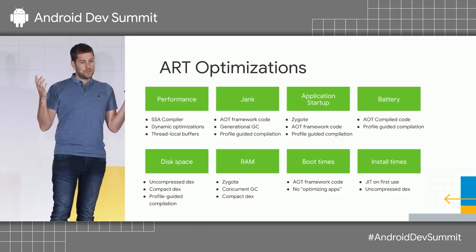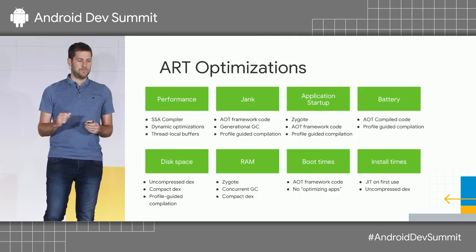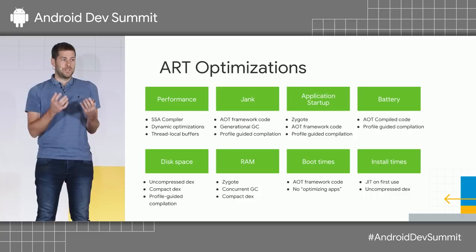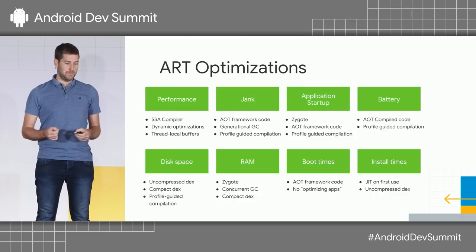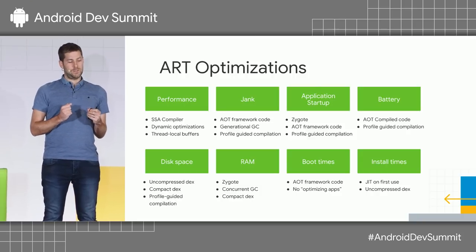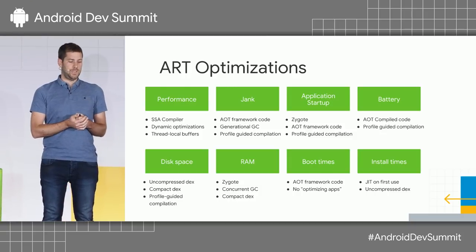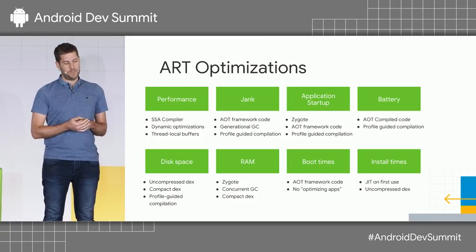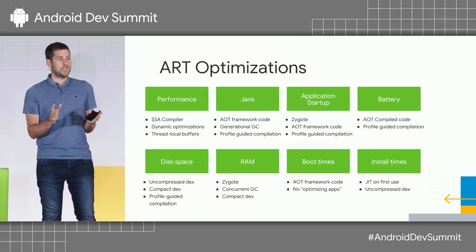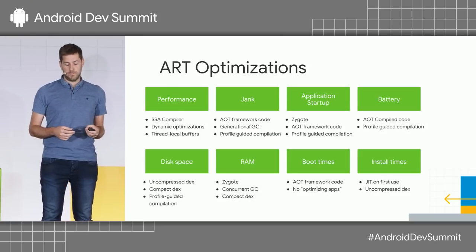Things ART matters for: I've put eight boxes. Raw performance — that's Java execution. Jank, application startup, battery, disk space, RAM, boot times, install times. This is really important — this is the thing that makes your user experience kind of okay, so that you can enjoy the apps.